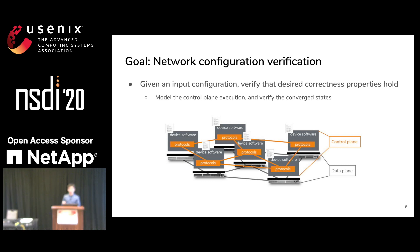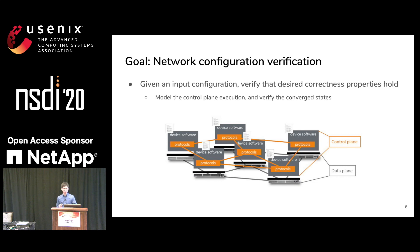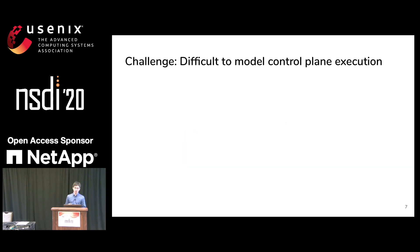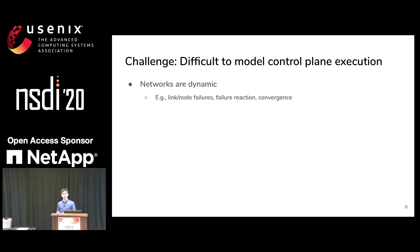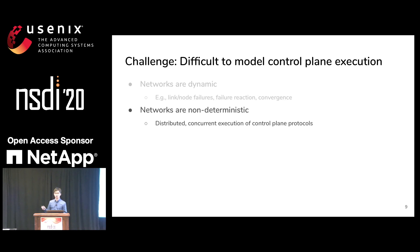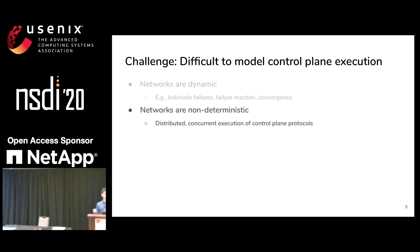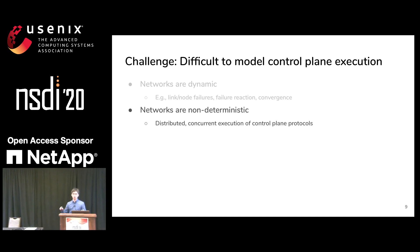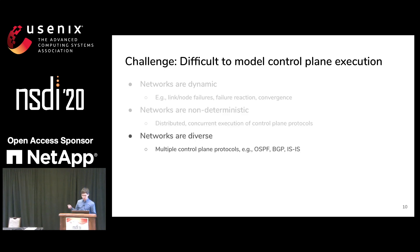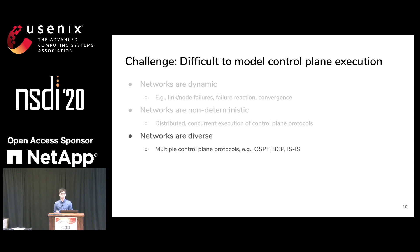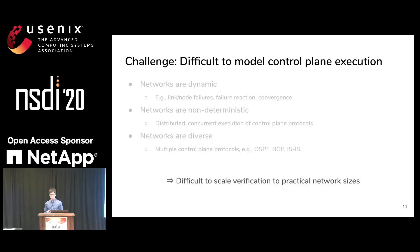In order to reason about network behavior formally, we need a model for the control plane execution and verify the converged states of that model. It is difficult to model control plane execution for several reasons. Networks are dynamic — there can be link or node failures and the control plane protocols will react to those failures. Networks are non-deterministic due to the distributed and concurrent execution of control plane protocols. Networks are also diverse — there can be multiple protocols running simultaneously, such as BGP, OSPF, and ISIS.